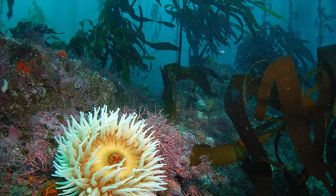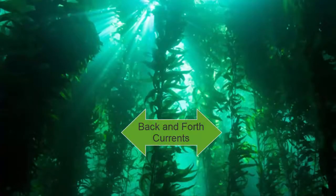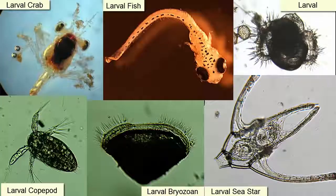Ocean currents also affect marine organisms. In shallower areas where currents are strong, organisms like seaweeds that can grow holdfasts onto rocks benefit from a continually recharged zone of nutrients and oxygen transported by those currents. Larval organisms use currents to find new locations in which to grow new populations. However, fragile organisms that cannot survive the high energy of currents and waves must find safer places to live so they aren't torn off rocks or pushed against them.